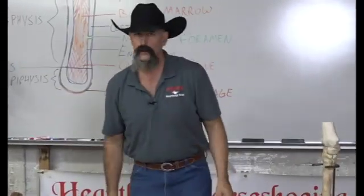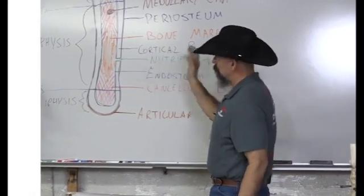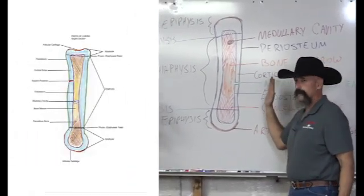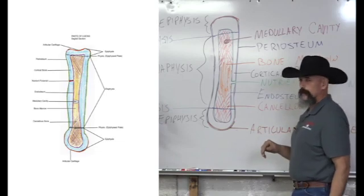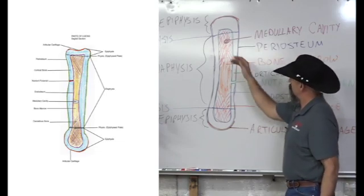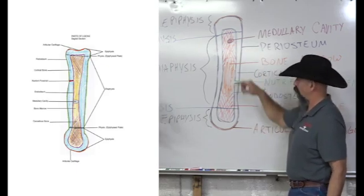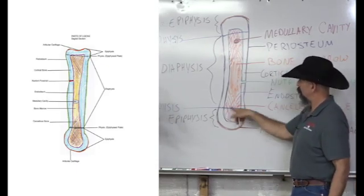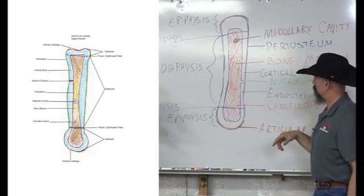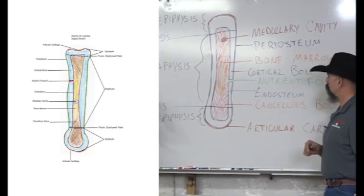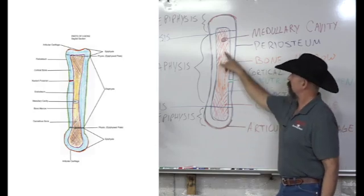Here's a generic piece of bone to illustrate the parts. From the outside in: we have articular cartilage on both ends at synovial joints. The outer skin is called the periosteum, which covers the cortical bone — the hard shell. The inside is hollow and contains cancellous bone and bone marrow. That medullary cavity is lined with endosteum. The bone gets nutrients through a hole called the nutrient foramen.